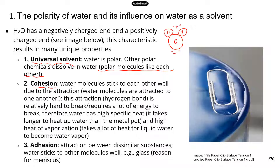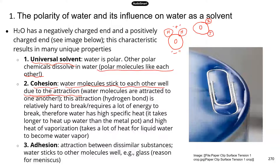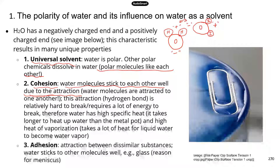The second property is cohesion, which refers to water molecules sticking to each other very well due to attraction. If I draw another water molecule, this positive end and this negative end — different charges attract each other. These two water molecules are attracted to each other, so they like to be close. There's a force that holds them together — that's what cohesion is about.